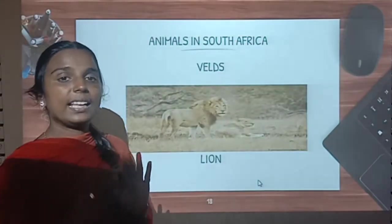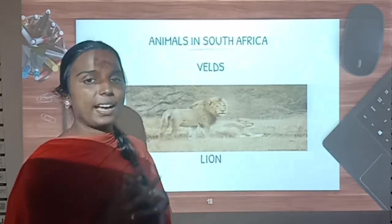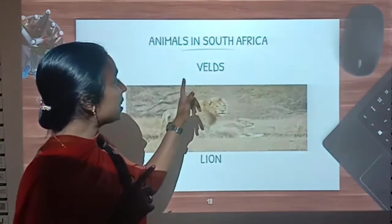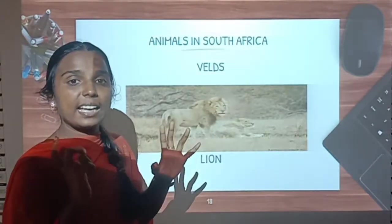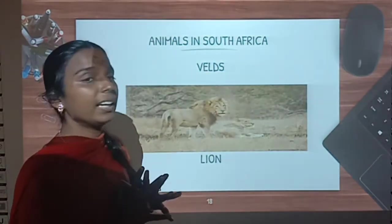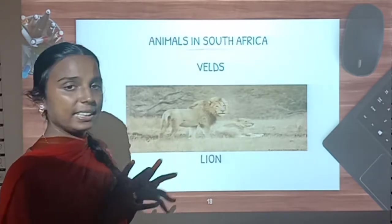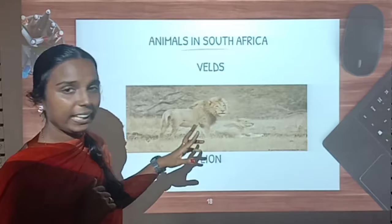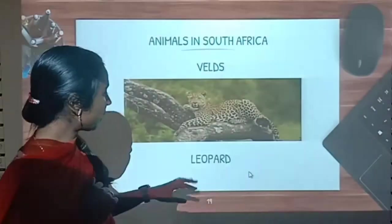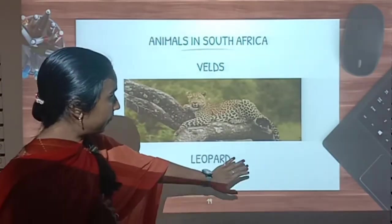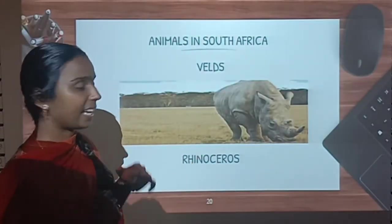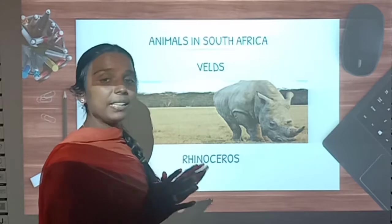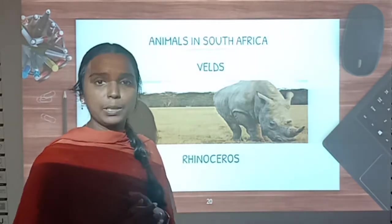Now let us see what animals we can find in the grasslands of South Africa. The grasslands in South Africa are known as veld. Let us see what animals we can find in the veld. See — lion, so in these grasslands we can see lion. And then leopard and rhinoceros. These are the animals we can see in the grasslands of South Africa.